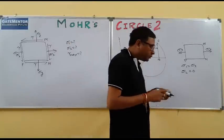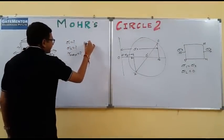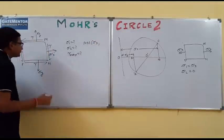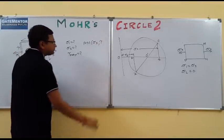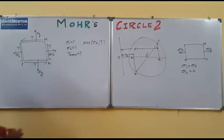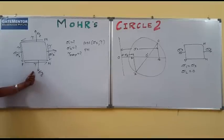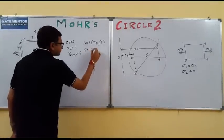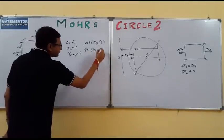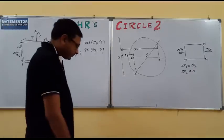On each plane we know the specific stress conditions. On plane M, the normal stress is sigma x and the shear stress is equal to tau. Similarly, on plane P, the normal stress is sigma y and the shear stress is also equal to tau in magnitude. But we must follow the sign convention.